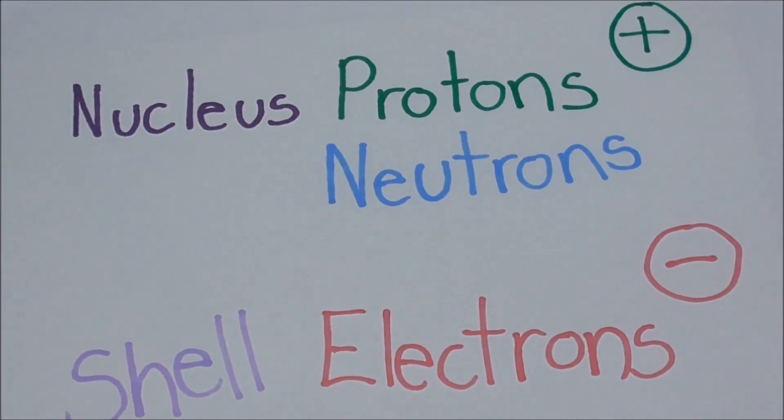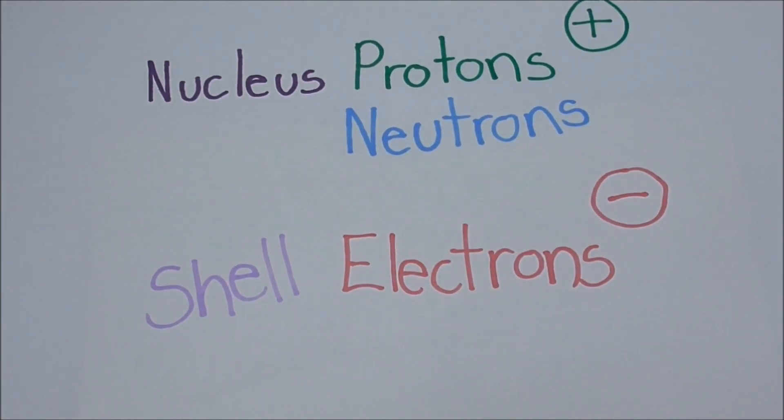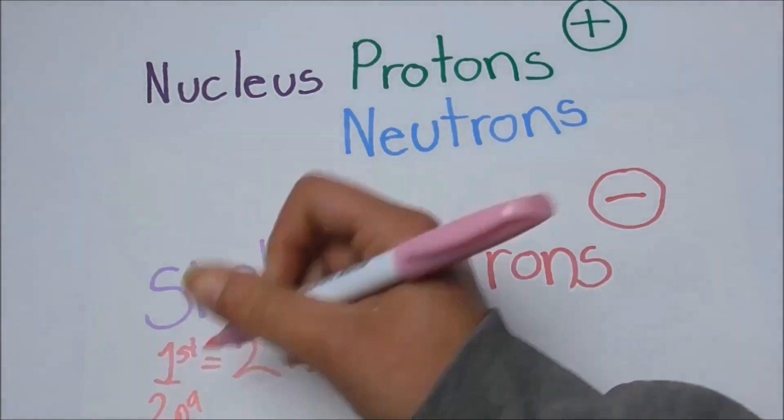Now important thing to keep in mind is with the shells, in the first layer there's two of them, second one eight, third one eight, and so on.